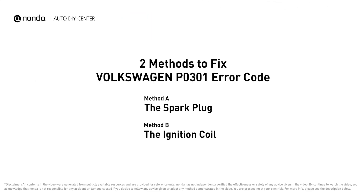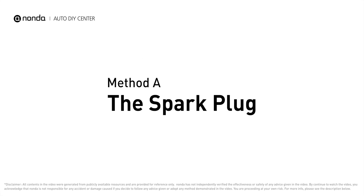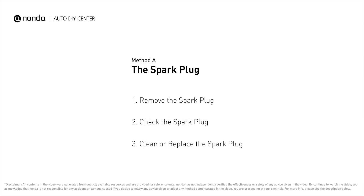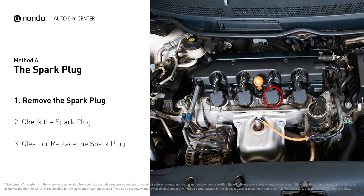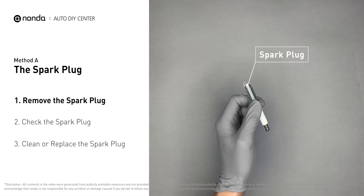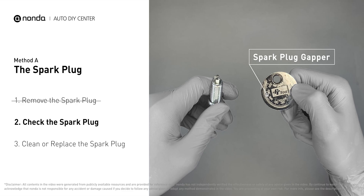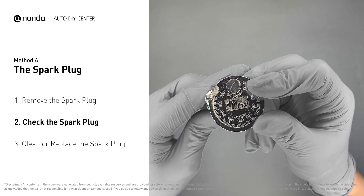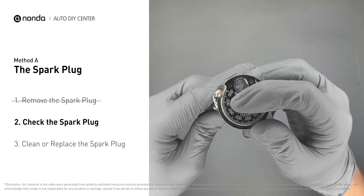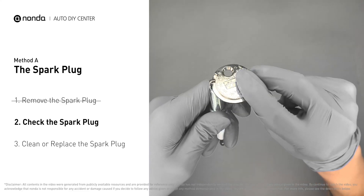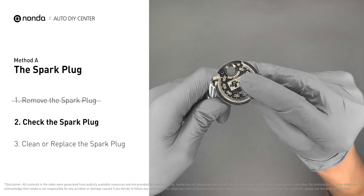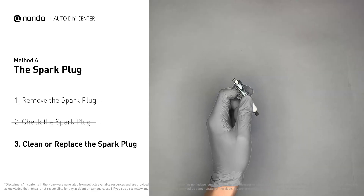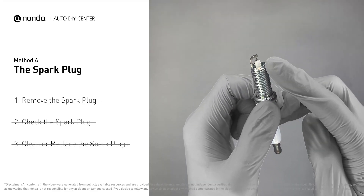Here are two of the most practical solutions to fix Volkswagen's P0301 error code. Method A: the spark plug. The spark plugs are located at the engine end of the wires, under the plug covers. Carefully remove the spark plug and use a spark plug gapper to check the spacing — it should normally be between 0.024 to 0.071 inches. If the spacing is low, use the gapper to increase it back to the normal range. If there is obvious damage on the spark plug, simply replace it with a new one.